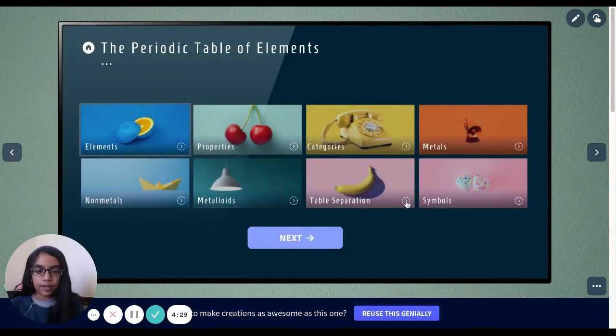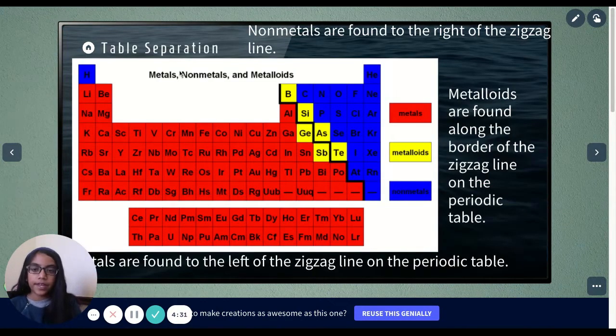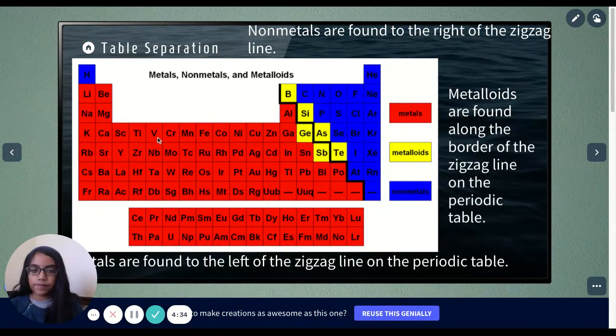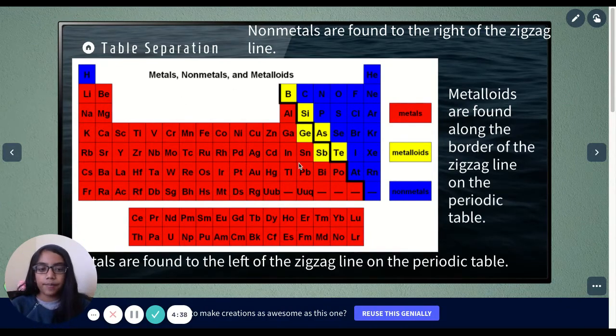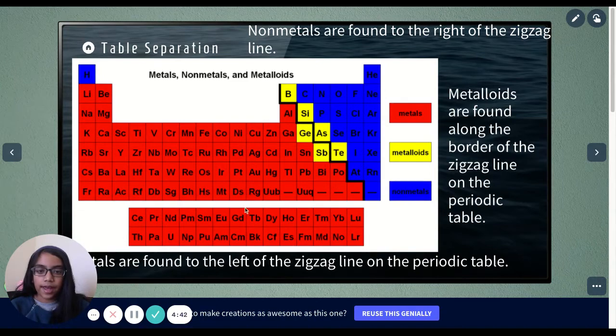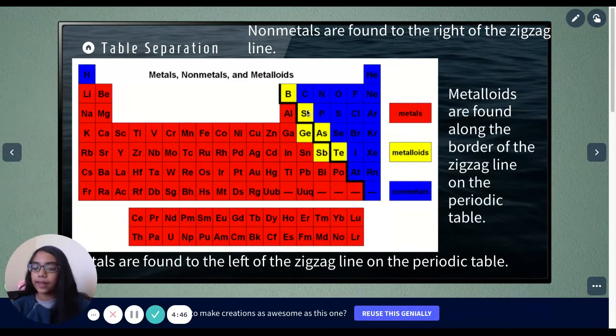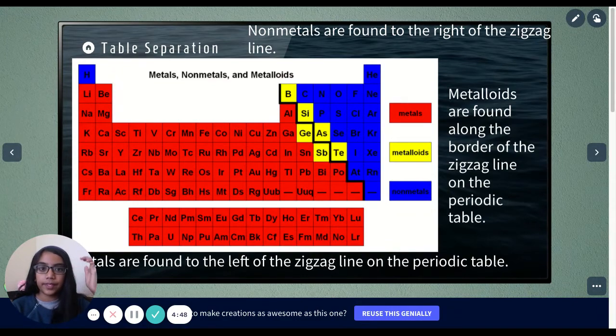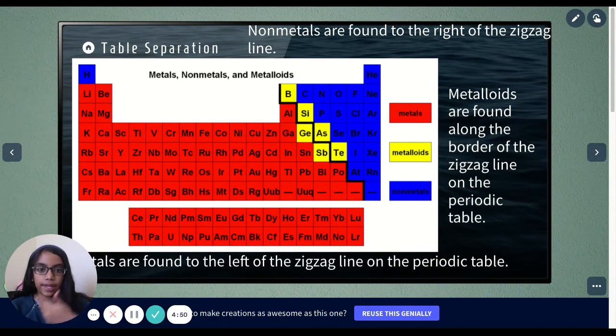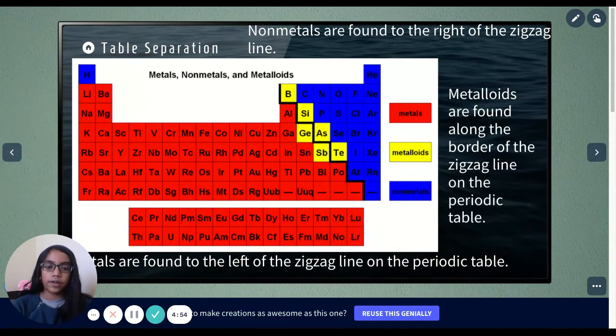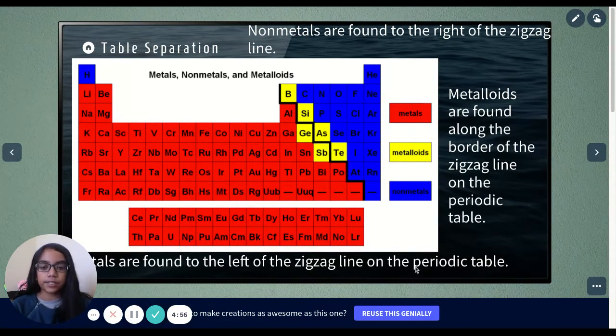Now let's look at the table separation. This whole thing is the periodic table of elements, and how is it grouped into. In this picture, it shows red as metals and yellow as metalloids and blue as non-metals. But that's not the official way how the elements are grouped into. They're not grouped into colors. It's just showing us how the elements are grouped into.